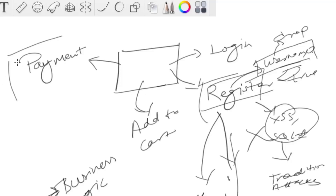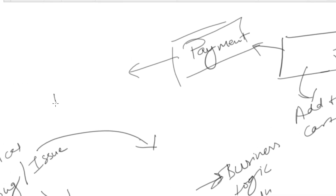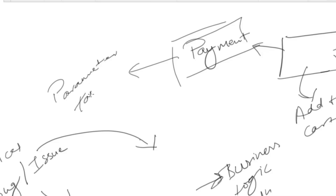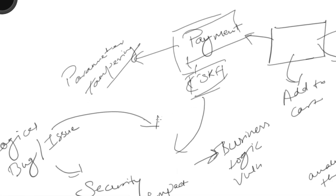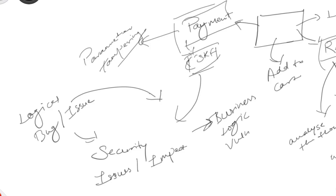Similarly, we can look at payment functionality for parameter tampering. Sometimes these applications lack CSRF protection — for example, I came across a CSRF in an add-to-cart functionality in Google. In that kind of scenario, you need to create a clear security impact so the security team understands that this could lead to reputation damage, business impact, or a CIA breach for clients. That's basically what a business logic issue is.